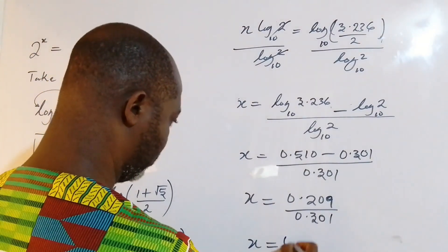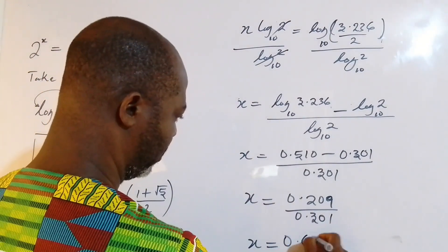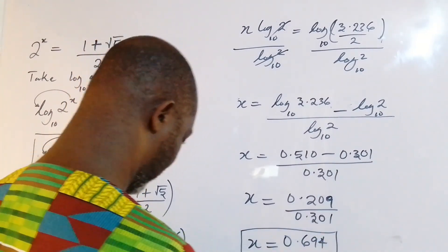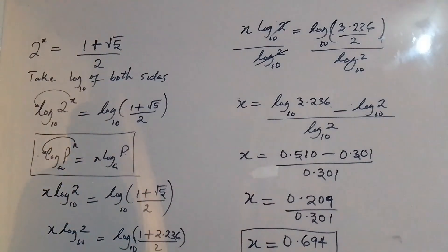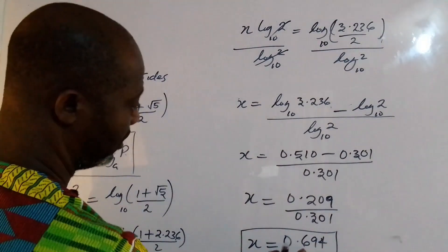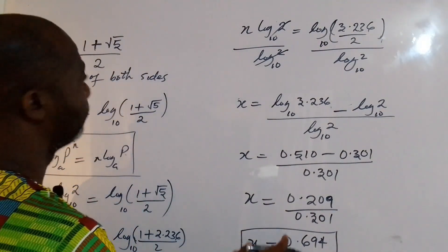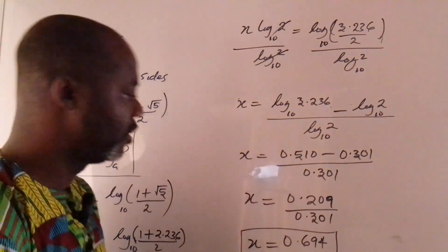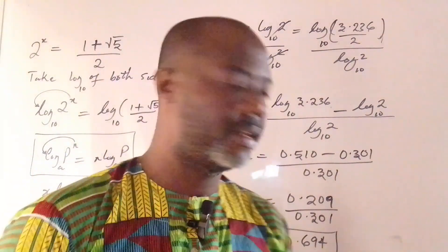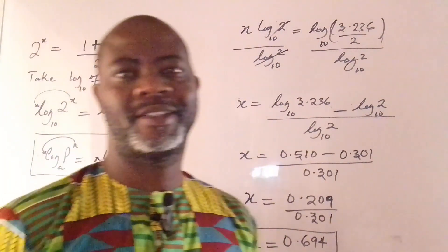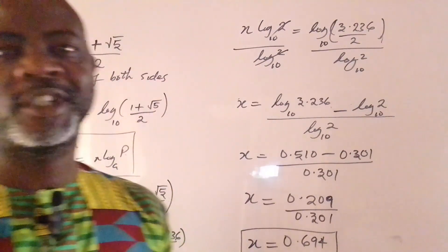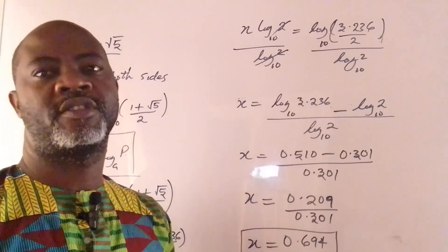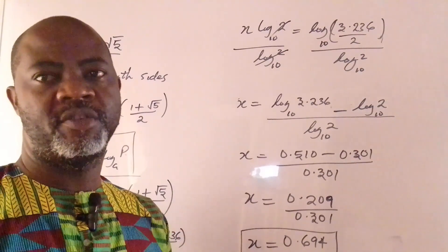The answer for x is approximately 0.694. So guys, there you have it — for this exponential equation, the value of x is 0.694. Please watch, learn, subscribe, share the video, and leave your comment. I'll see you in my next video.